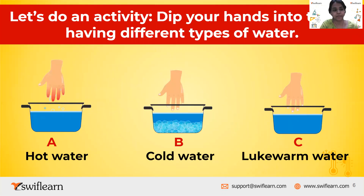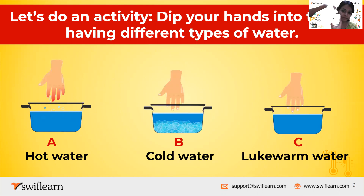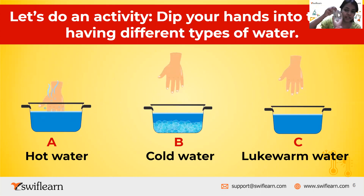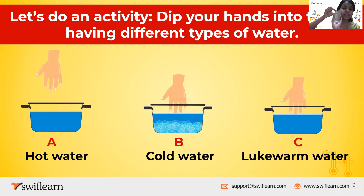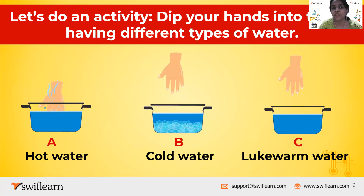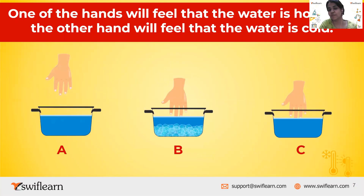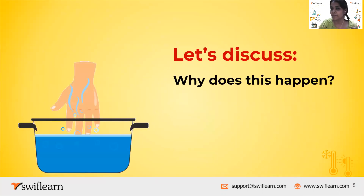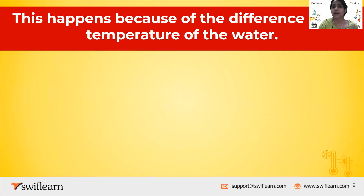Let's do an activity. Dip your hands into jars having different types of water. Jar 1 contains hot water, Jar B contains cold water, and Jar C contains lukewarm water. One hand will feel the water is hot while the other hand will feel it is cold. Why does this happen? This happens because of the difference in the temperature of water.